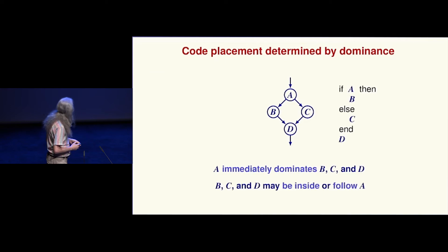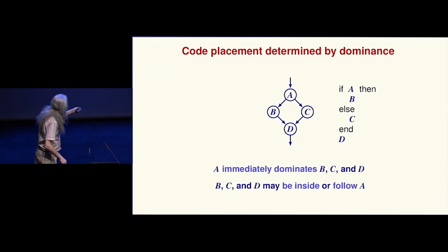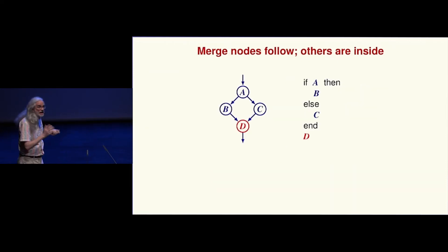What we're going to do with the placement is: in my recursive function, at some point I'm going to be given A, and I'm going to translate A and everything that it dominates. The things that it dominates that are its direct successors are going to go inside, and other things are going to follow A. That's how my recursion is going to work. How do I know what goes inside and what follows? What follows are the merge nodes—anything that's reached in two different ways by forward edges. The other ones, where there's only one way to get to B or C, those are going to go on the inside.